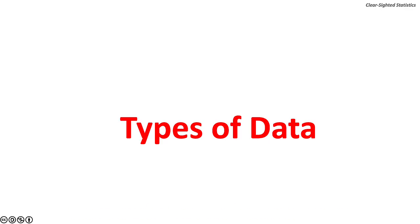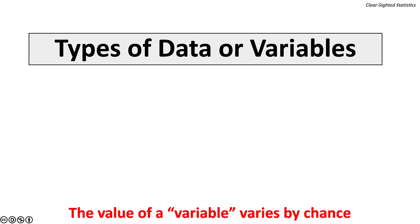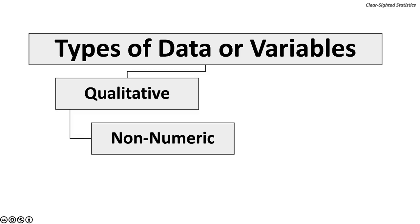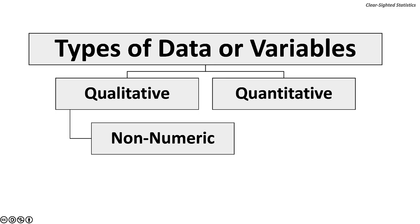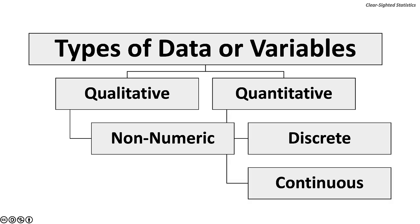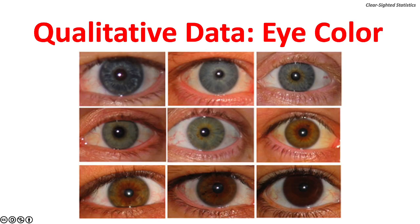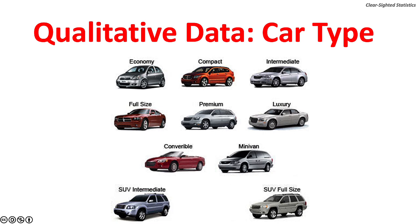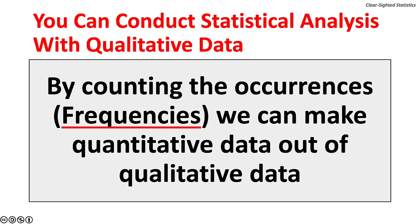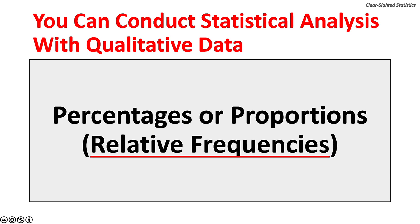Let's turn to the types of data or variables. The value of a variable varies by chance. Data can be qualitative, which is to say non-numeric. Data can also be quantitative or numeric. Quantitative data can be discrete or continuous. For qualitative, categorical, or attribute data, the characteristic being studied is non-numeric. Eye color and car type are examples of qualitative data. You can conduct statistical analysis with qualitative data by counting occurrences or frequencies, and converting counts into percentages or proportions, called relative frequencies.